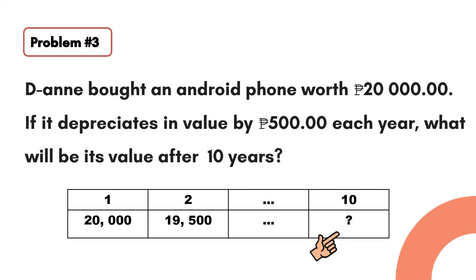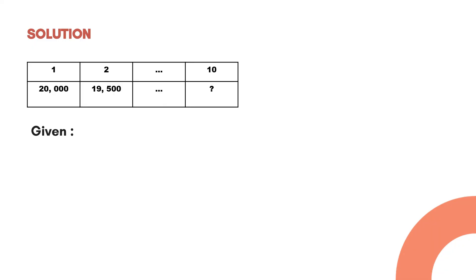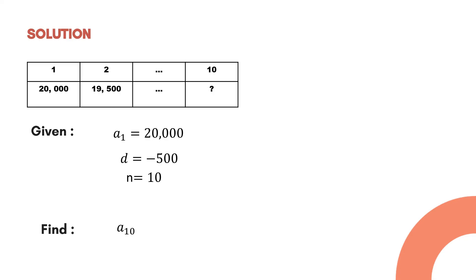In this problem we will be solving for the value of the Android phone in the 10th year using the arithmetic sequence formula. From the sequence the given values are: a₁ = 20,000, common difference d = −500 (obtained by subtracting the first term from the second term), and n = 10.